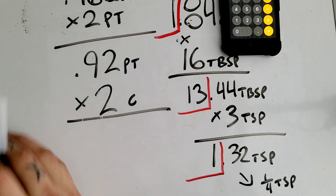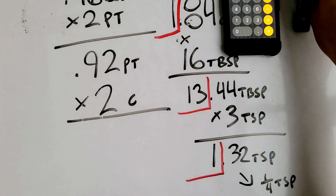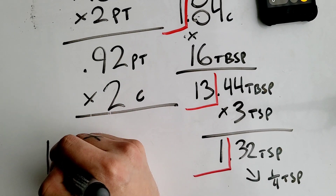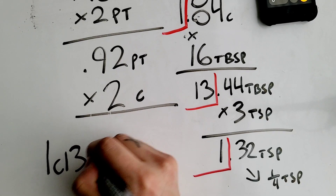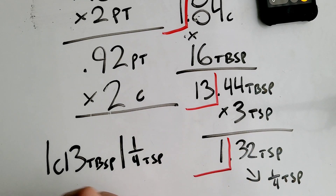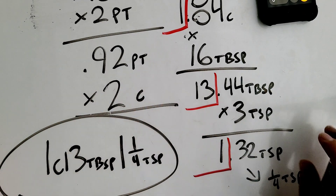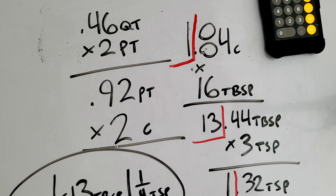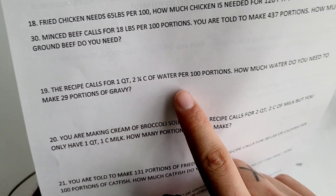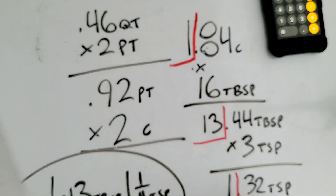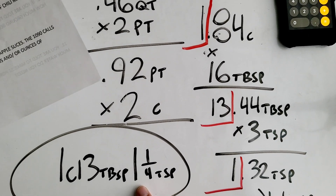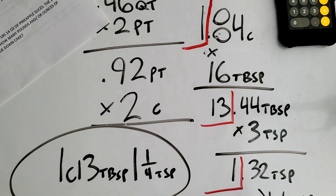Now we add all the blocked numbers together. The final answer is 1 cup, 13 tablespoons, and 1 and one-fourth teaspoons. So to summarize: with 1 quart and 2 and one-fourth cups of water you can make 100 portions of gravy, and with 1 cup, 13 tablespoons, and 1 and one-fourth teaspoons you can make 29 portions of gravy.